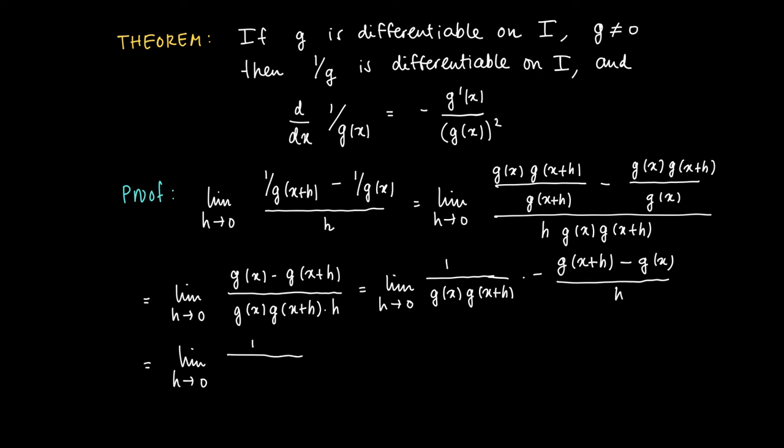So we get the following limit. We see that we have a product of terms and we can calculate this limit as a product of limits if only those limits exist. Well, this is what follows next.